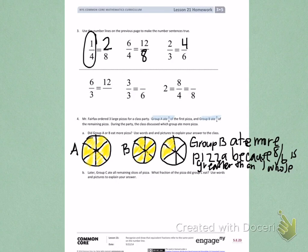Letter B, later group C ate all remaining slices of pizza. What fraction did group C eat? Use words and pictures to explain your answer. So we're going to look at this picture here of what is left over.